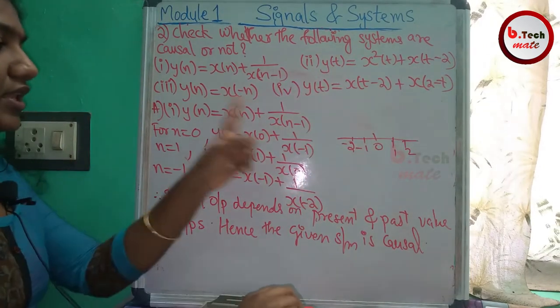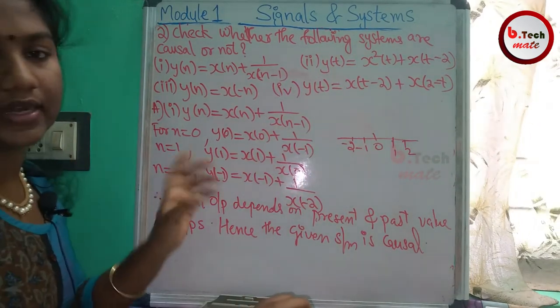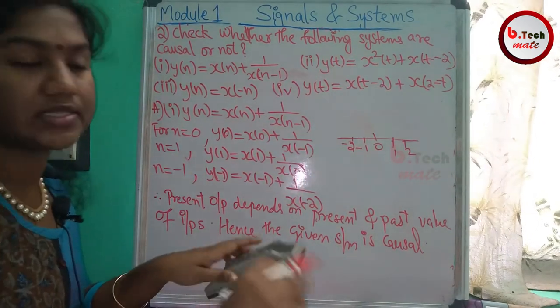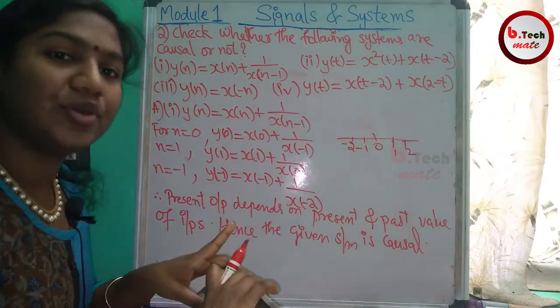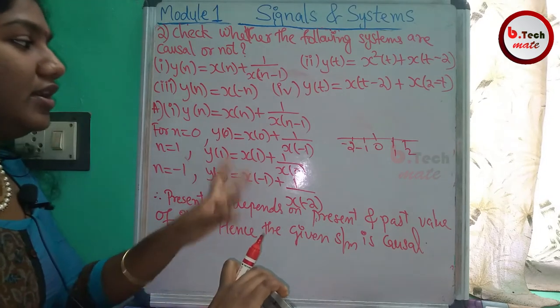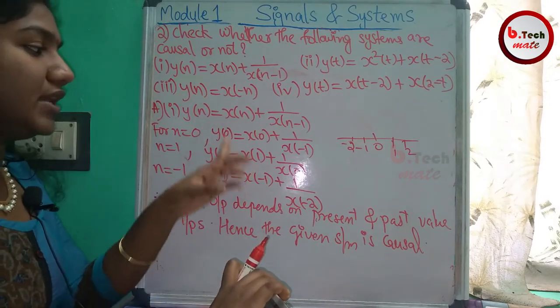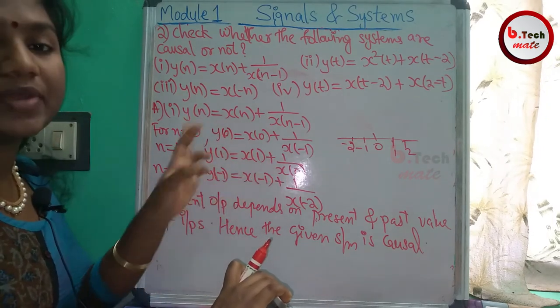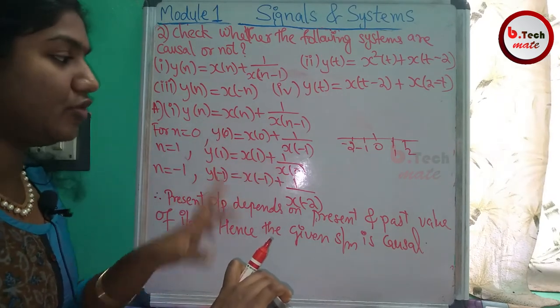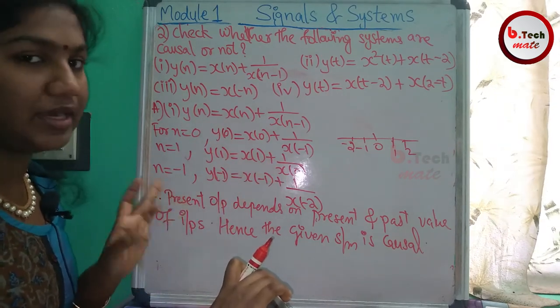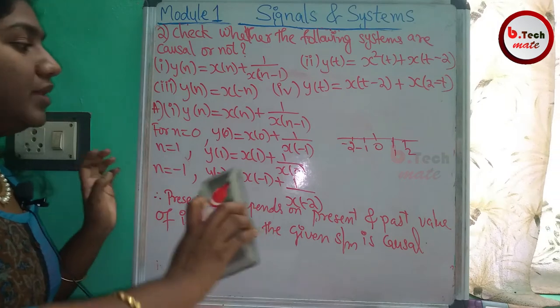Hence, this given discrete time system is causal. The first system is a causal system, since the present output depends on present and past values of inputs.